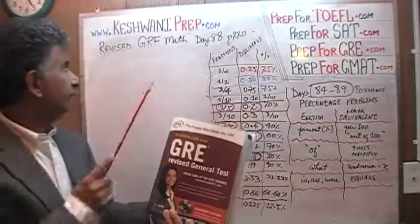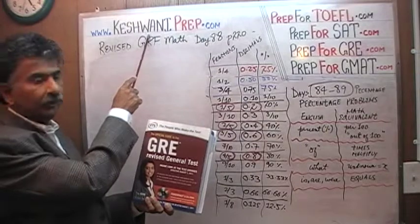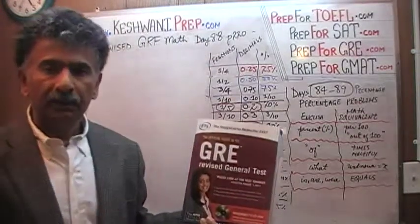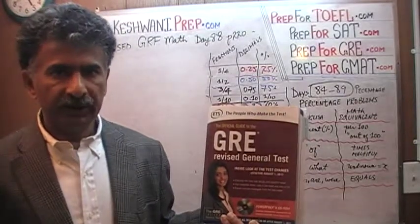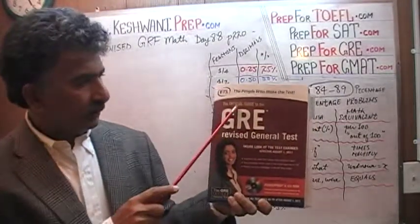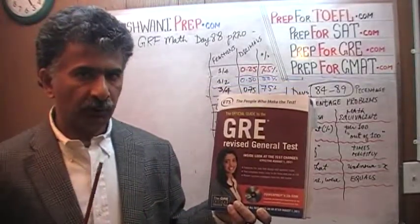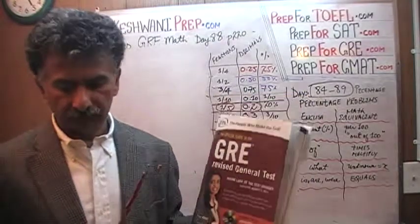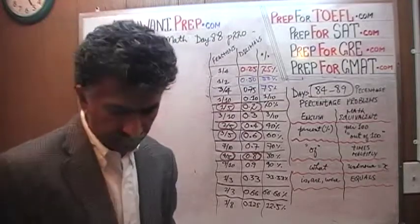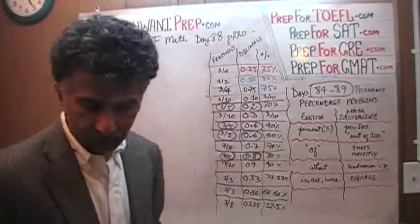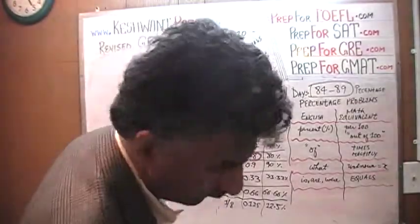Hello, my name is Keshwani — that's K-E-S-H-W-A-N-I. We are here because we want to prepare for the GRE. We have been solving GRE math questions out of this book, The Official Guide to the GRE: The Revised General Test. If you do not own this book already, purchase one immediately — you are going to need it. The problems we are about to solve are on page 220, and today is our lesson number 89.